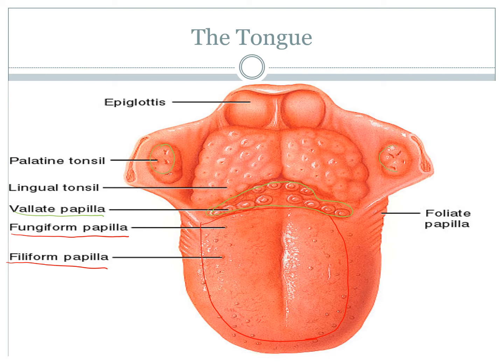Your taste buds can be found on top of your tongue, the sides, your cheeks, your pharynx, and all the way back in your epiglottis — each controlled by a different cranial nerve. Now, in order to be recognized by your taste buds, the food you eat needs to be dissolved with saliva.